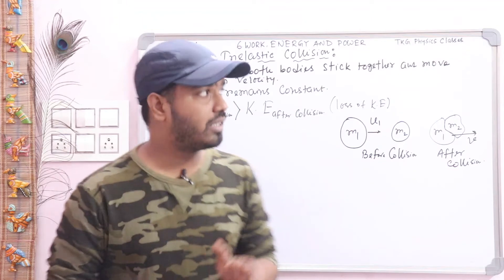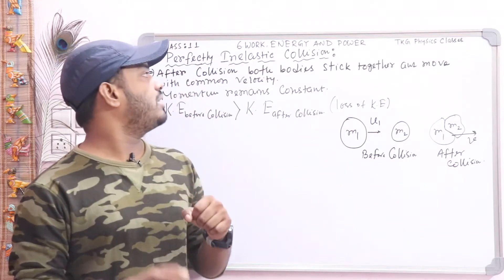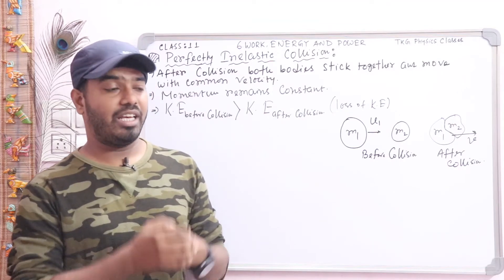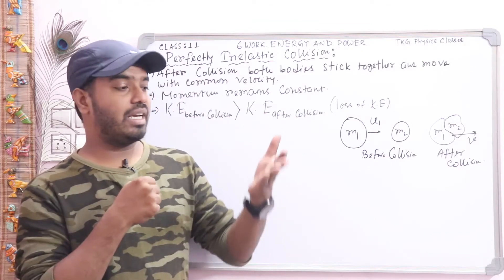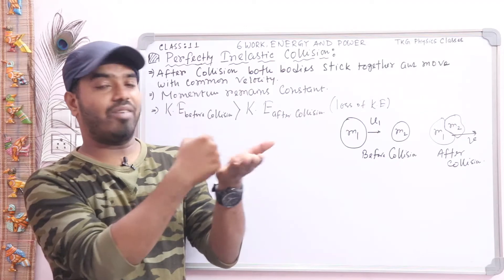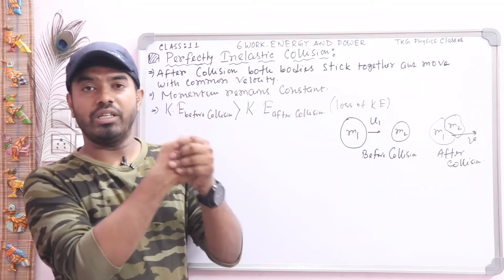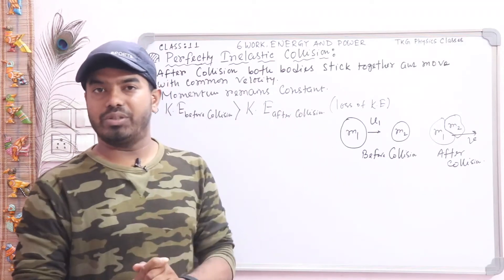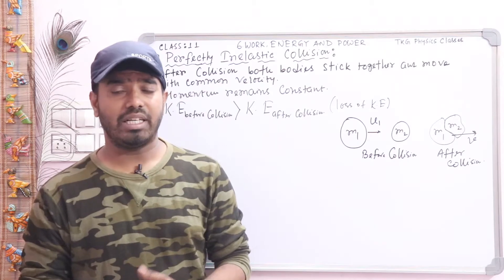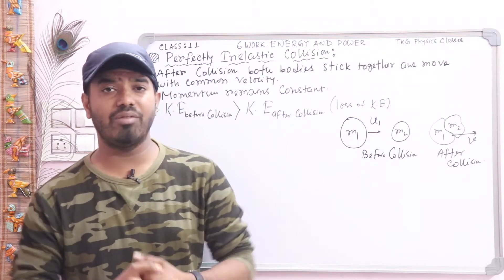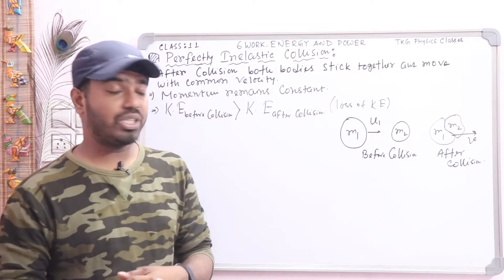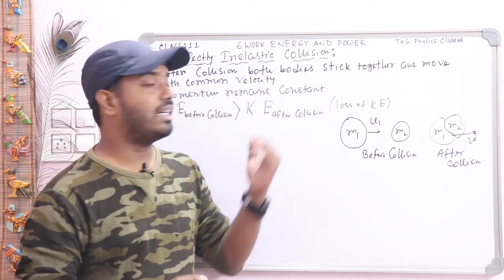Condition one: after collision both bodies stick together and move with a common velocity. A body moving with a velocity strikes a target — another body at rest — and after collision these two bodies stick together and move with a common velocity. Condition two: momentum remains constant. We already know that in every type of collision, linear momentum is conserved.